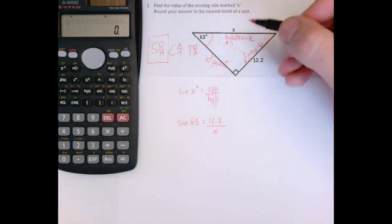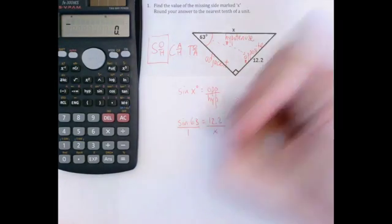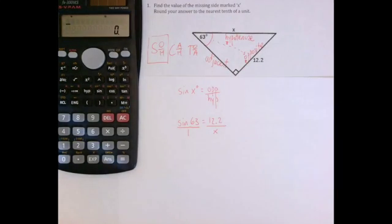Now here to solve this, I find it easiest to put this side over 1 as well, and then I've got equivalent fractions. Once I have two fractions, one on either side of equals, I can cross multiply to solve.